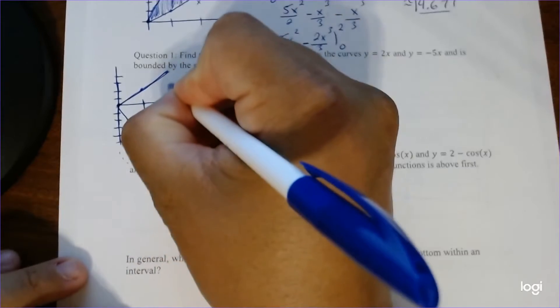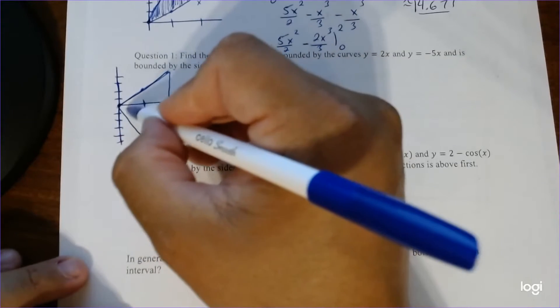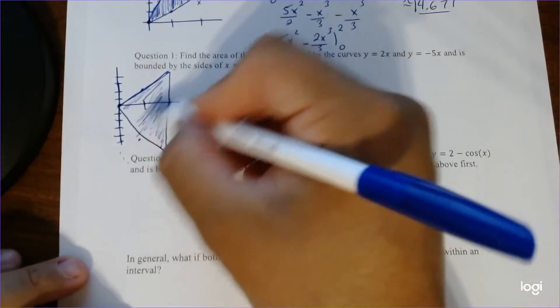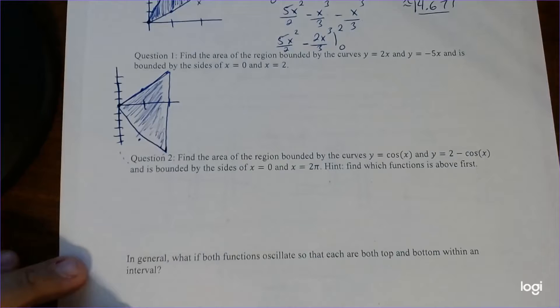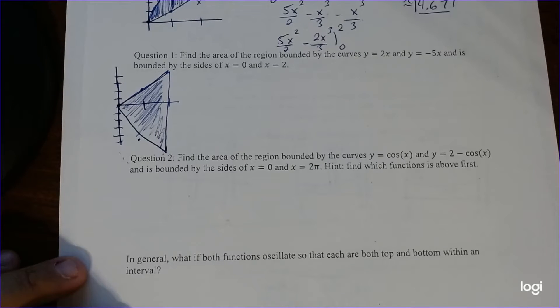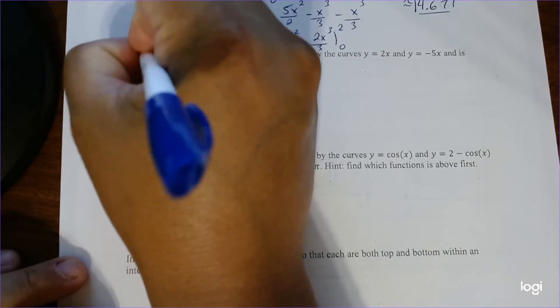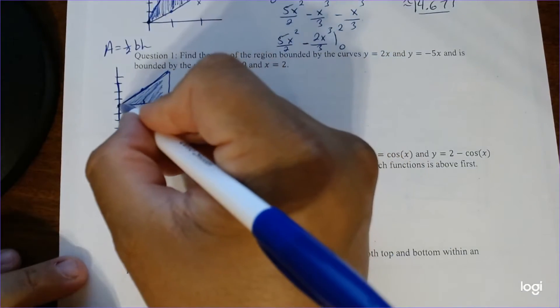So essentially, we want the area of this really big triangle. Now, believe it or not, we can actually use geometry, right? Since this is a triangle, we can just find the area of a triangle, which is just 1 half base times height. We can figure out the height. It's pretty simple. It's just 2.